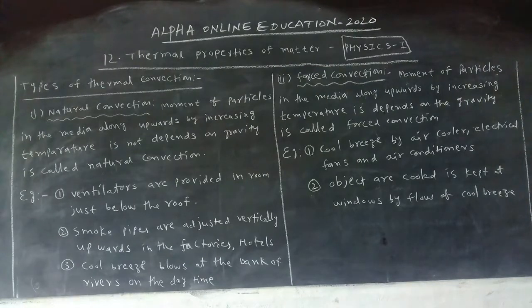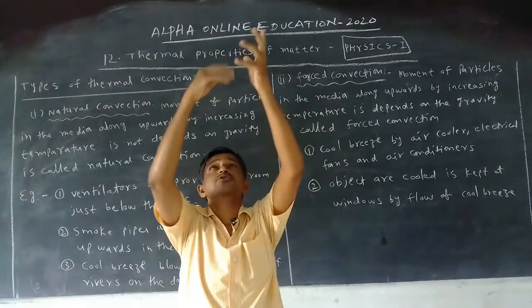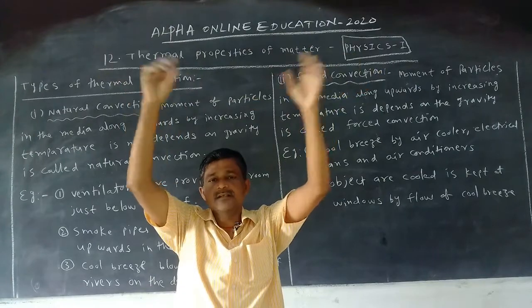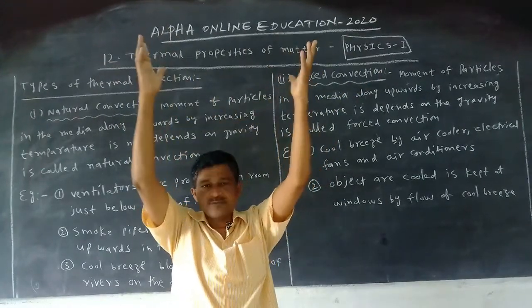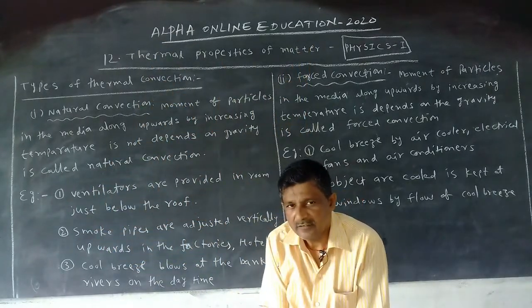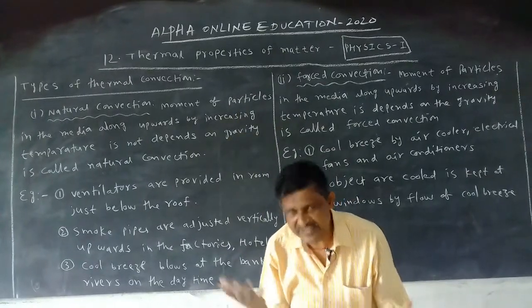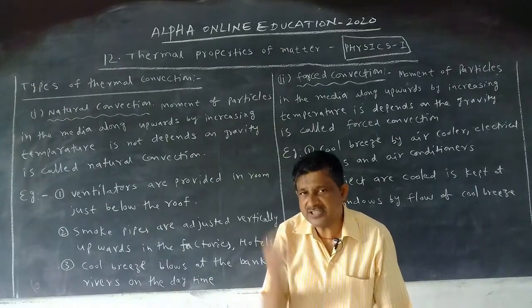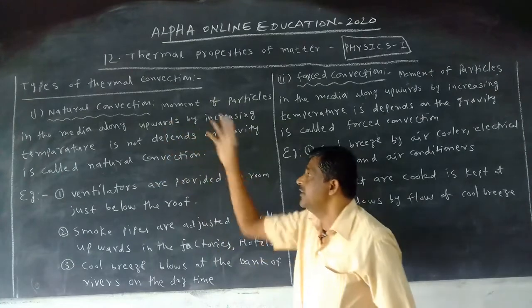Another example: smoke pipes. Smoke pipes are vertically upwards. In factories and hotels, you see huge pipes. Hot gases — that is, smoke — are ejected from those pipes. The smoke, which is a hot gas, always moves upwards. Gravity's effect is that smoke moves upwards by the process of natural convection.